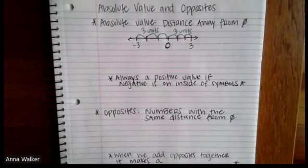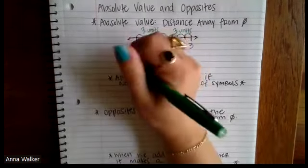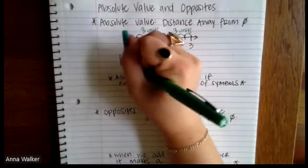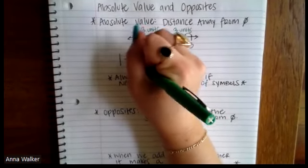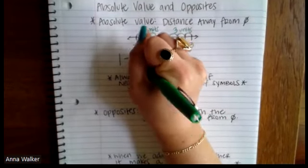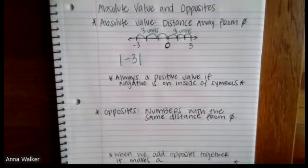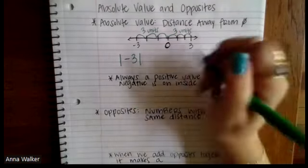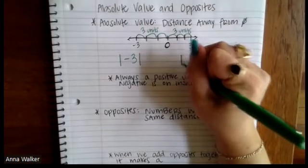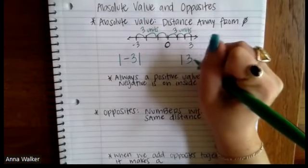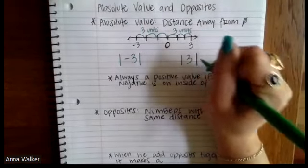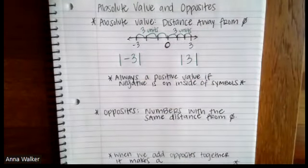The way that we model absolute value is we use these vertical lines that look like this. So if I'm trying to model the absolute value of negative three, I'm going to use these vertical lines. If I want to model the absolute value of three, I'm going to use the vertical lines.